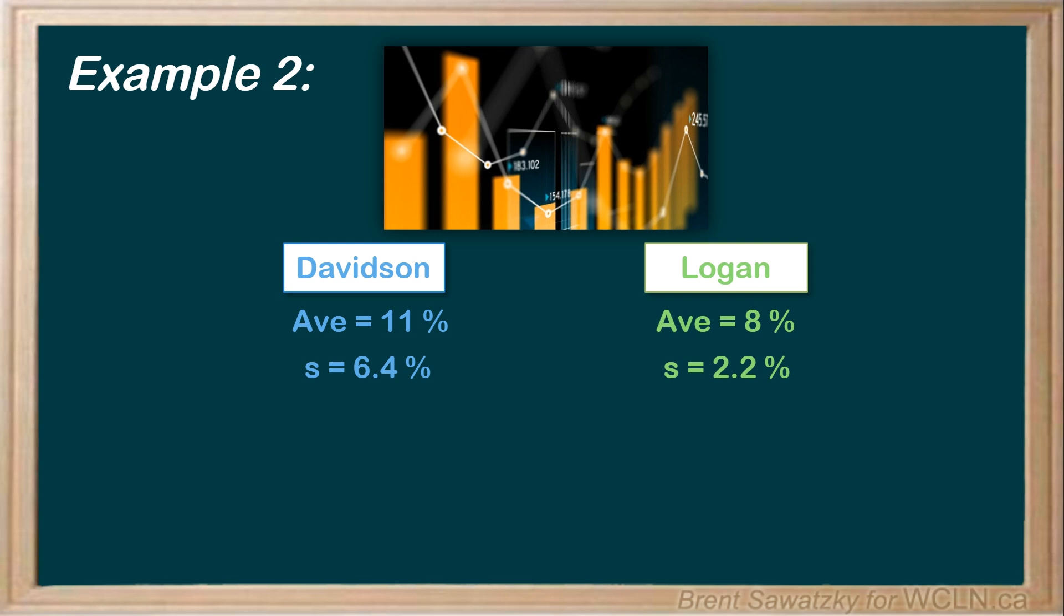Okay, so what does that tell us? It means that the Davidson investment strategy has a big spread of results. Some people using the strategy did really well, while others did quite poorly. The center of the curve is at 11%, but it's low and wide. It shows drastically different outcomes here.